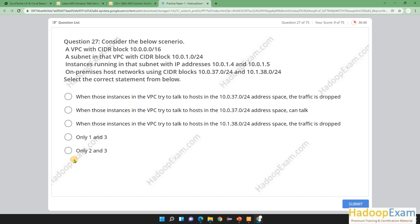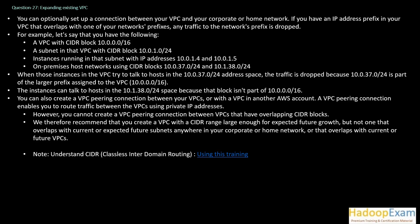Regarding a VPC and its CIDR block: you can optionally set up a connection between your VPC and your corporate or home network using VPN or Direct Connect. However, if you have IP address prefixes in your VPC that overlap with one of your network's prefixes, any traffic on that overlapping network prefix would be dropped. This is called CIDR block overlapping.